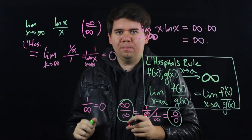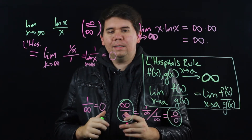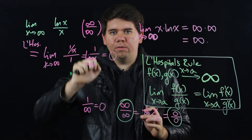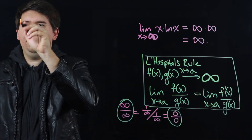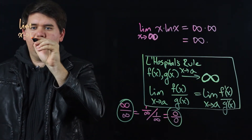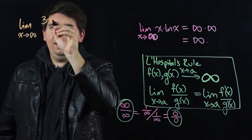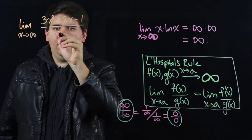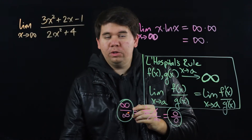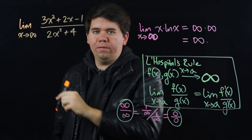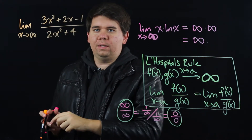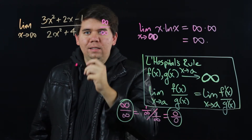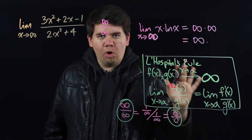So our overall limit comes out to be 0. Let's see one more example using L'Hôpital's rule with the indeterminate form infinity over infinity. Consider the limit as x goes to infinity of 3x squared plus 2x minus 1, all over 2x squared plus 4. If we try to evaluate this, the top approaches infinity and the bottom also approaches infinity, so this is an indeterminate form that requires L'Hôpital's rule.